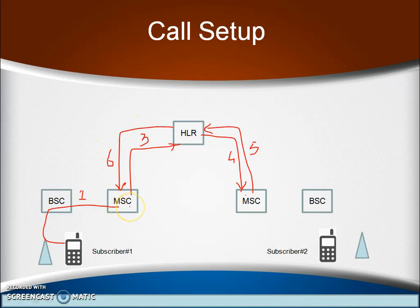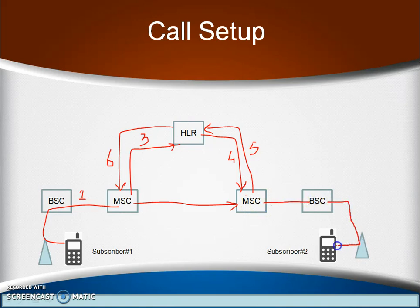Once MSC1 knows the MSRN number, the routing information exchange ends and the signaling information is sent to MSC2. Once MSC2 receives the MSRN number, it tries to locate the particular mobile station by establishing signaling information to that subscriber. Once the signaling information is established, the subscriber's phone starts ringing — and this is how the call is established using the localization procedure.